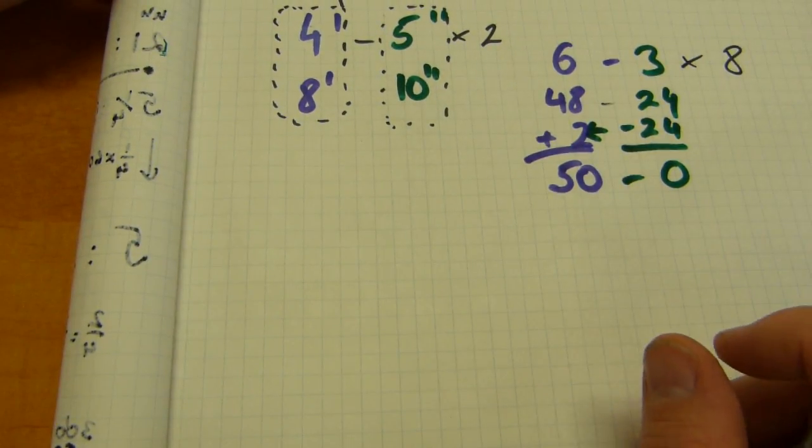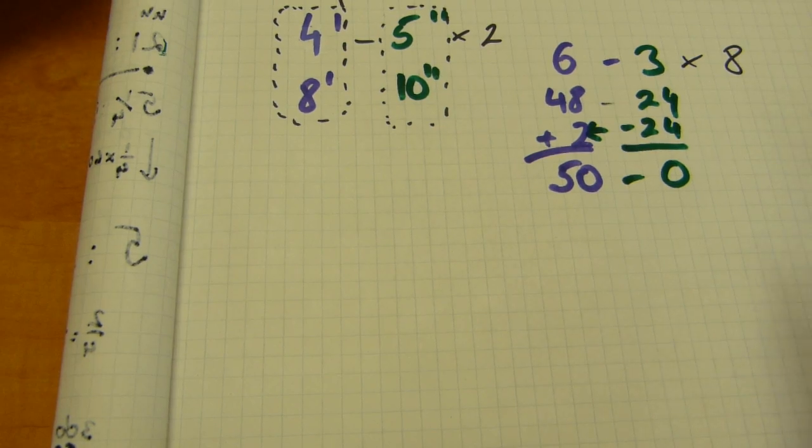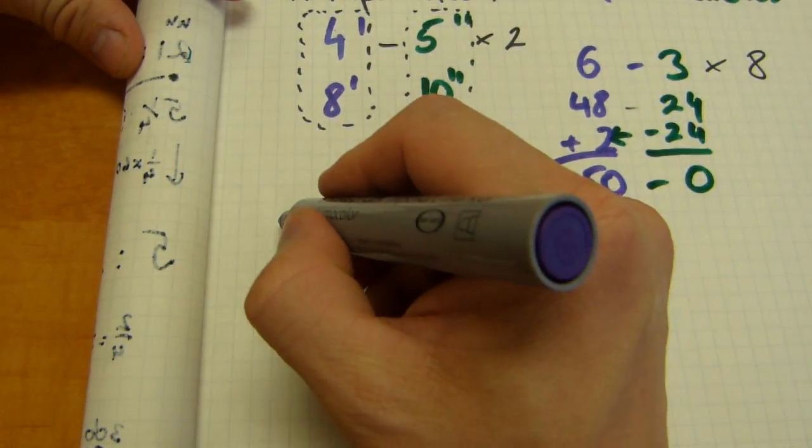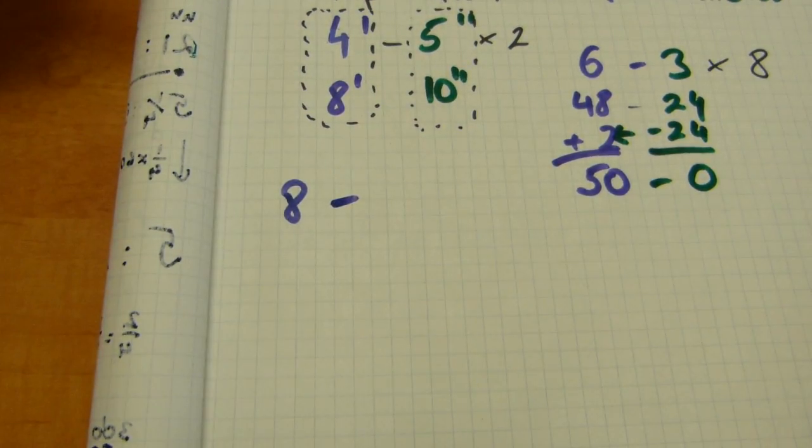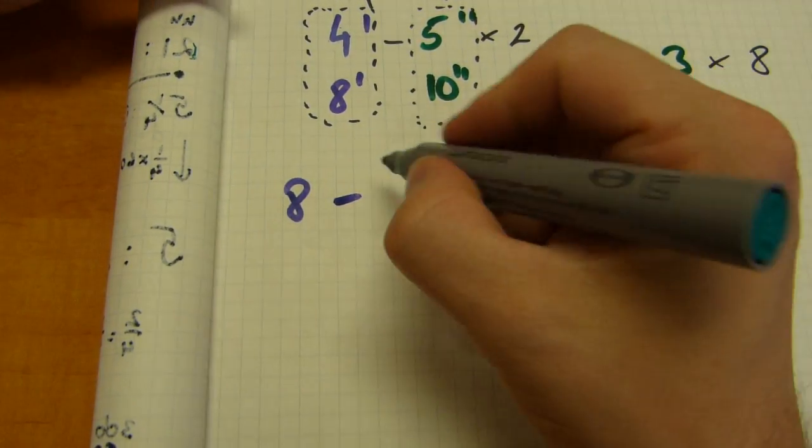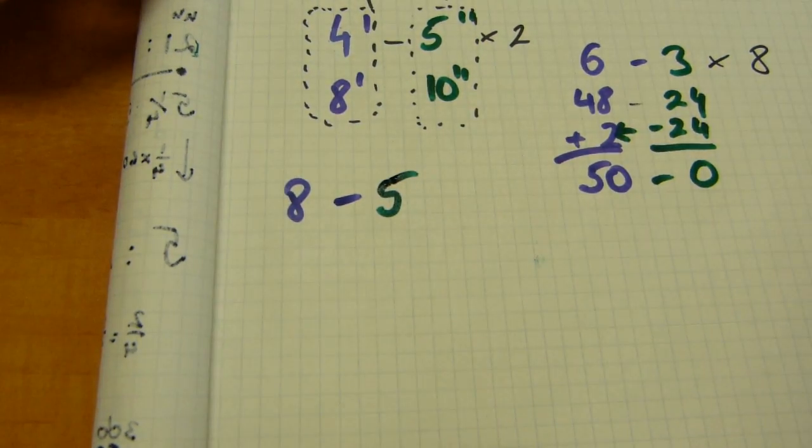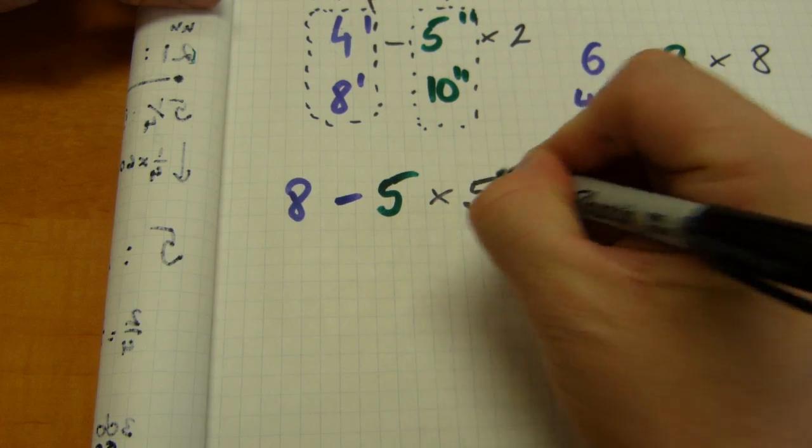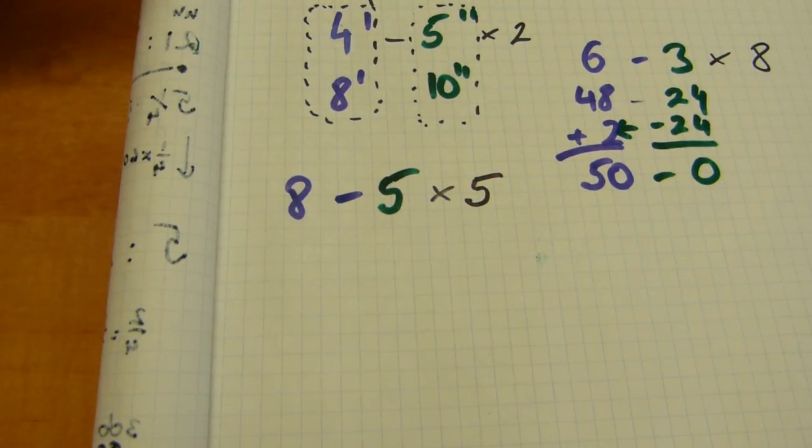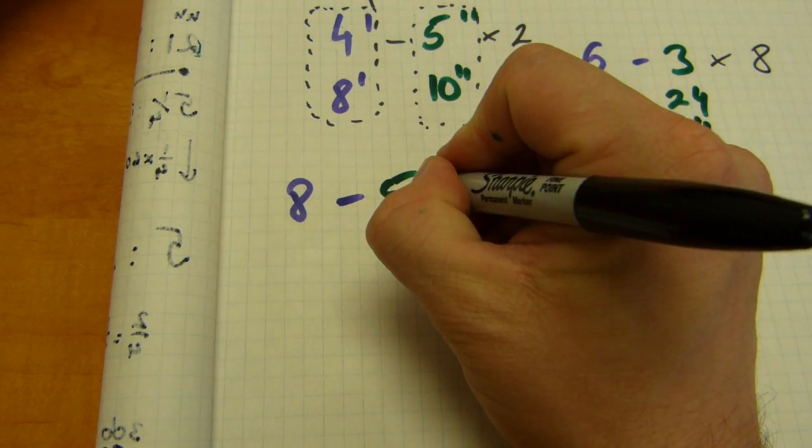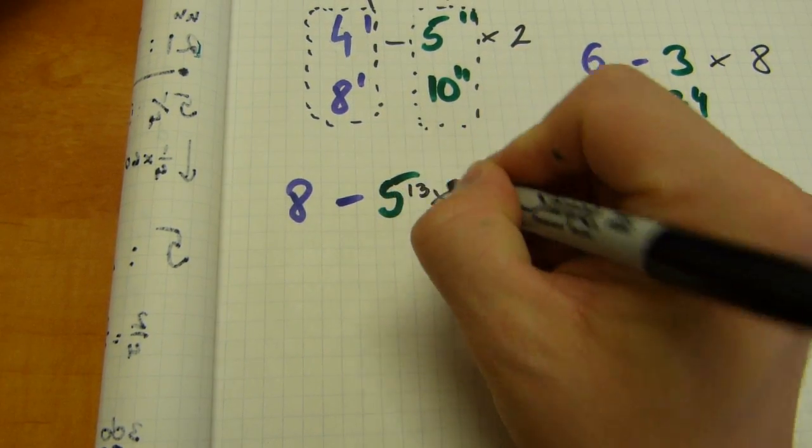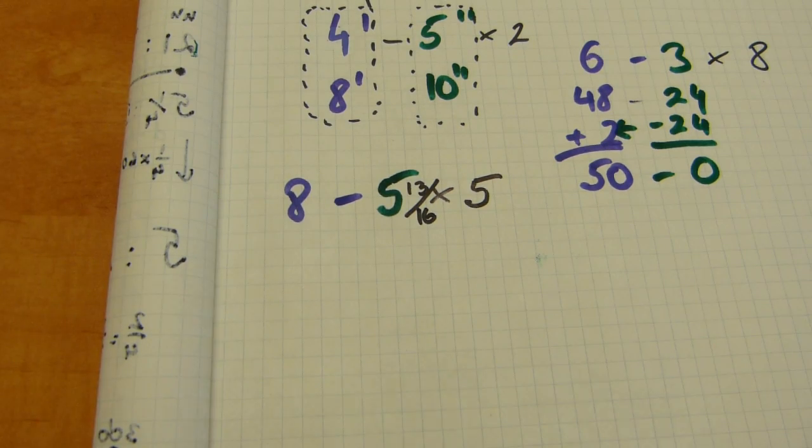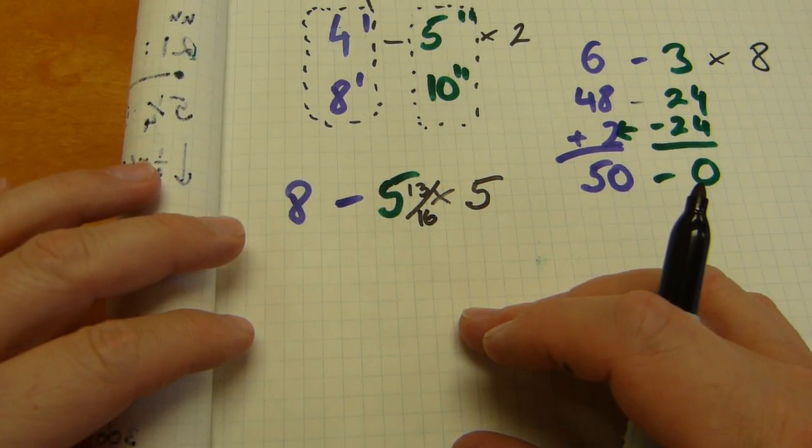Let's look at a third one with fractions in this space here. How about a measurement such as 8 feet and 5 and 13/16ths of an inch multiplied by 5? It's a little bit cramped, but this one is gonna have three columns here. One column for the fractions, one column for the inches, and one column for the feet.